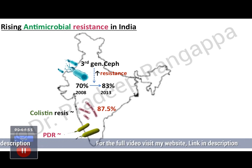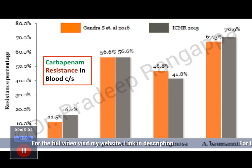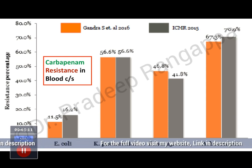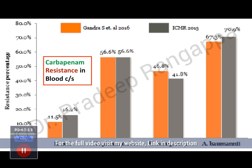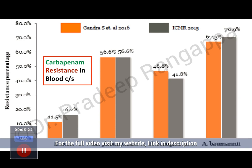We are seeing more resistance coming in Klebsiella and Pseudomonas, as opposed to Acinetobacter, which was a problem about a decade back. These were two studies from ICMR 2015 and by Gandra. The carbapenem resistance is what is currently the problem. This study looked at blood culture and carbapenem resistance. Acinetobacter is still high in that 2015 study, but subsequent evidence from 2017 and 2018 shows Klebsiella pneumoniae and Pseudomonas more prominently.